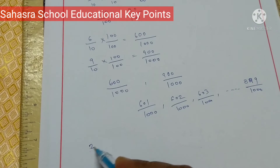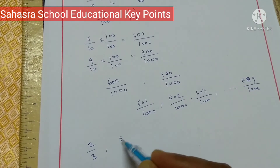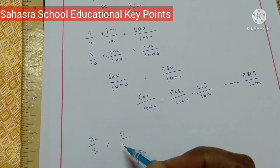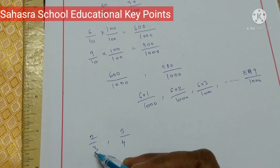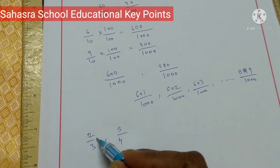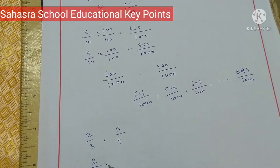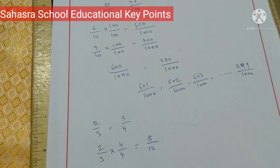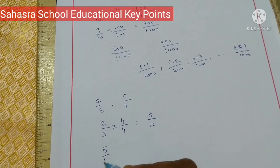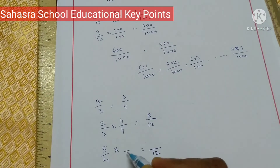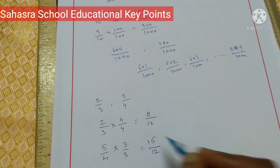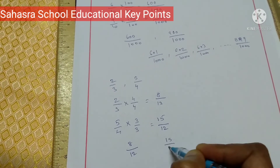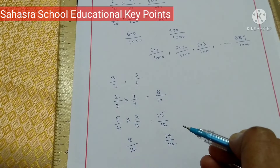Suppose we find a rational number between 2 by 3 and 5 by 4. The denominators are different, so we make them equal. The LCM of 3 and 4 is 12. 2 by 3 becomes 8 by 12 — 4 threes are 12, so multiply numerator by 4 to get 8. 5 by 4 becomes 15 by 12 — 3 fours are 12, so multiply numerator by 3 to get 15. So now we have 8 by 12 and 15 by 12, and the rational numbers between them are 9 by 12, 10 by 12, up to 14 by 12.